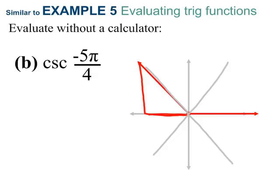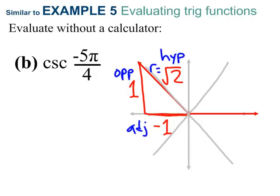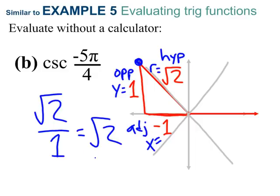I recognize that as my 45-45-90 degree triangle. It has side lengths of 1, 1, root 2, but we're on the x-y plane, so this is negative and the other two are positive. Hypotenuse is always positive, no exceptions. Cosecant is the reciprocal of sine, which is hypotenuse over opposite, which is square root of 2 over 1, or simply square root of 2.